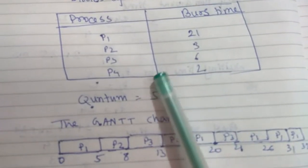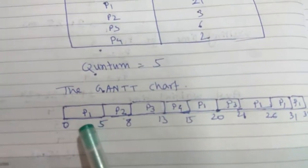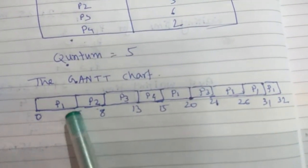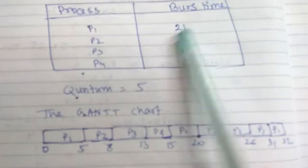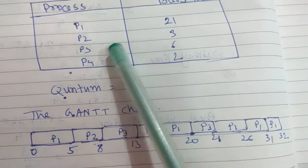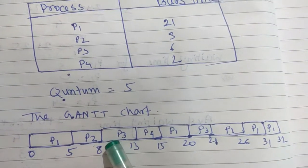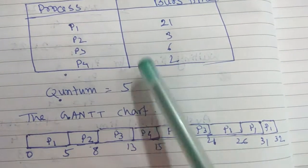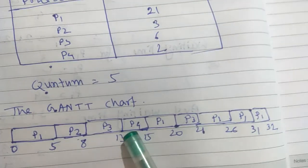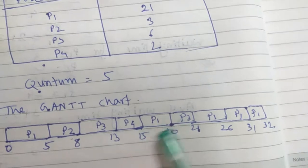In round-robin scheduling, every process is executed for the quantum time of 5. P1 is executed first for 5 milliseconds. Then P2 is executed — but P2's remaining execution time is less than the quantum, so P2 executes for only 3 milliseconds. Then P3 executes for the quantum time of 5 milliseconds. P4's execution time is also less than the quantum, so P4 executes for only 2 milliseconds. Then P1 executes again for quantum time.